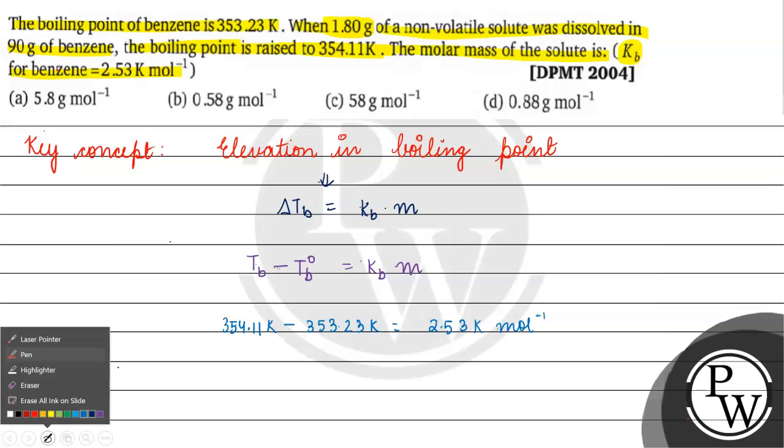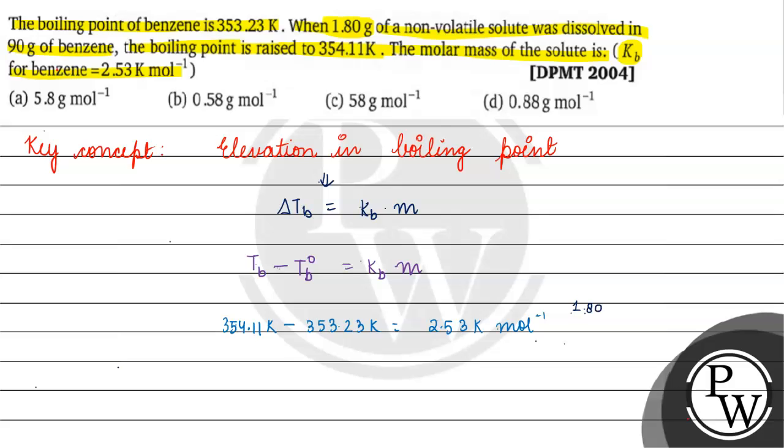If we talk about molality, what is molality? Molality is basically equals to number of moles of the solute by mass of solvent. Number of moles of solute is mass of solute by molar mass. Mass of solvent is 90 grams.